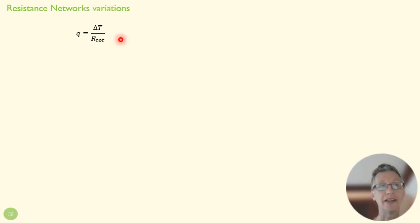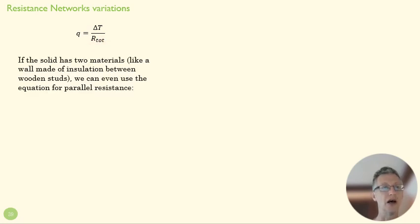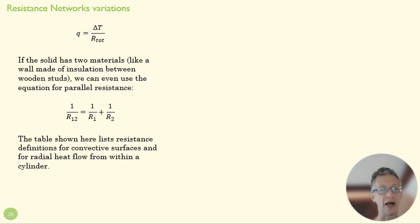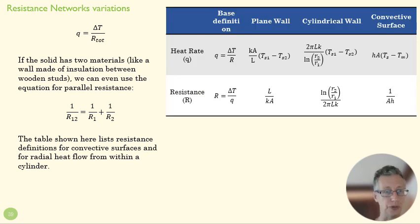So let's expand the way that this is useful. Here's our basic equation where q is going to be equal to the driving force divided by our resistance. We applied it to a series type network before; we can also apply it to a parallel type situation. If we imagine the heat flow through a wall that maybe has studs with insulation between the studs, that's like a parallel network—that heat flow can go in different ways through that wall just like in a circuit.